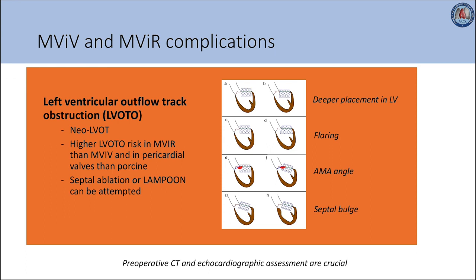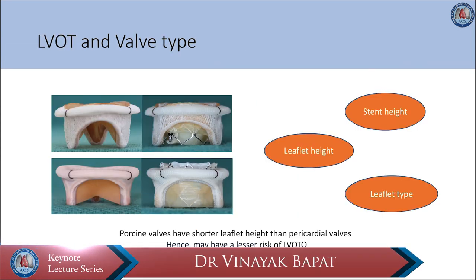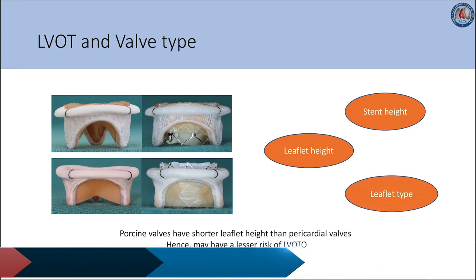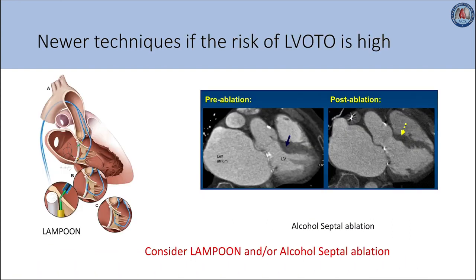We will now discuss two important complications in mitral valve-in-valve and mitral valve-in-ring. First, left ventricular outflow tract obstruction, or LVOTO. It is well known that deeper placement of the device, flaring of the device, narrow AMA angle, and septal bulge will increase the risk of LVOTO. Preoperative CT and echocardiographic planning is critical in identifying neo-LVOTO; a neo-LVOTO less than 1.5 cm² will increase the risk of obstruction. Early bench work has demonstrated lower risk of obstruction with porcine valves than pericardial valves, attributed to the shorter leaflet height in porcine valves. Newer techniques such as LAMPOON and preemptive alcohol septal ablation have shown to reduce the risk of LVOTO.